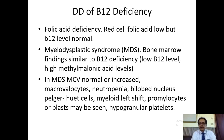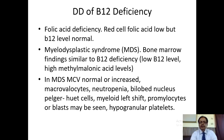Once the report shows Pelger-Huët cells, the spontaneous diagnosis is MDS — myelodysplastic syndrome. There will also be left-shifted or immature cells; forms like promyelocytes or blasts may be seen, and the platelets may be hypogranular — meaning granules present in the platelets will be in paucity. Remember these features and you will never forget the differential diagnosis.